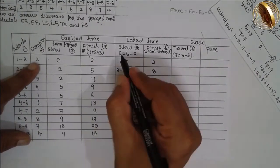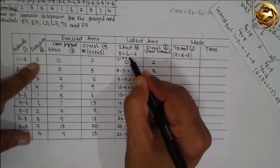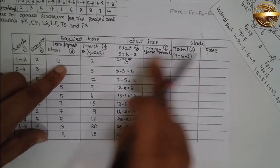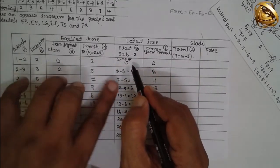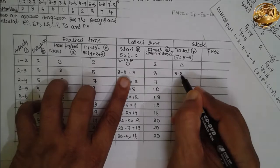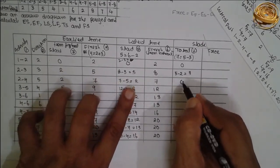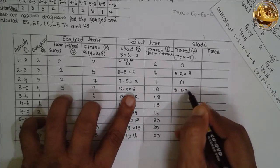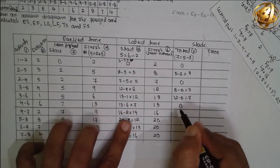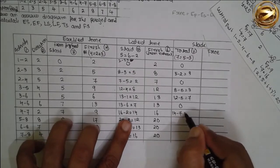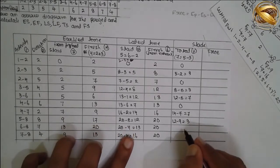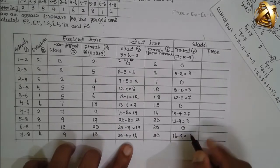Total slack is LF minus EF, or equivalently LS minus ES. Values: 1-2: 2−2=0; 2-3: 5−2=3 (or 8−5=3); 2-4: 7−7=0; 3-5: 12−9=3; 3-6: 13−6=7; 4-6: 13−13=0; 4-7: 16−9=7; 5-8: 20−17=3; 6-8: 20−20=0; 7-8: 20−13=7.